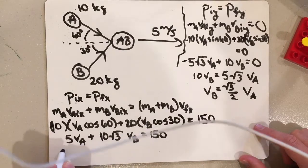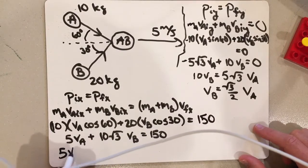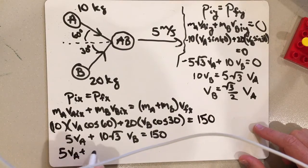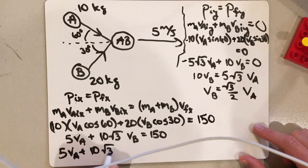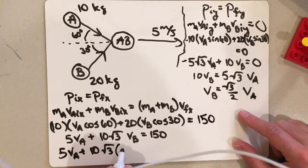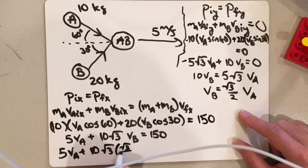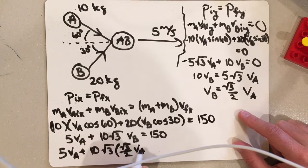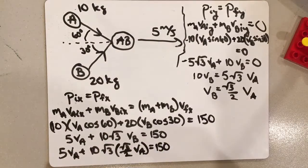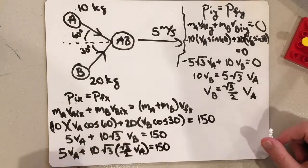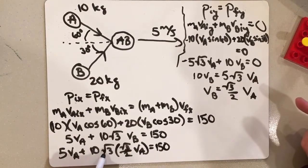And now all I have to do is take that and substitute it over here and then solve for VA. So if I do that, this is going to be 5 VA plus 10 root 3, VB is root 3 over 2 times VA. That has to equal 150.